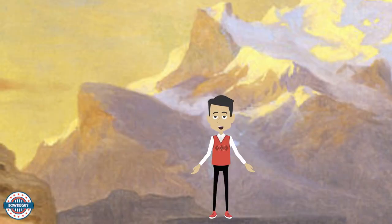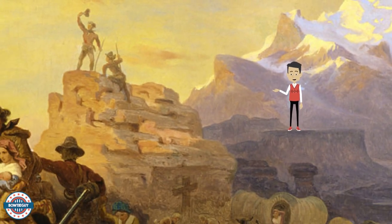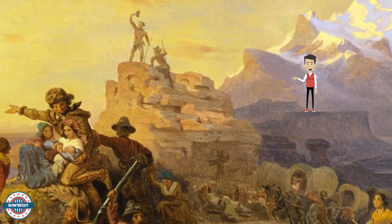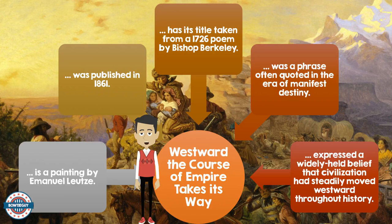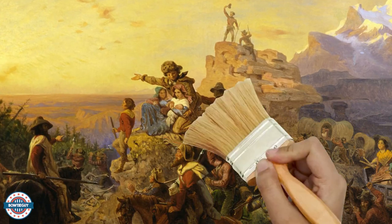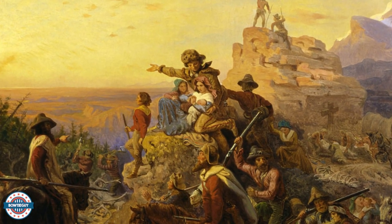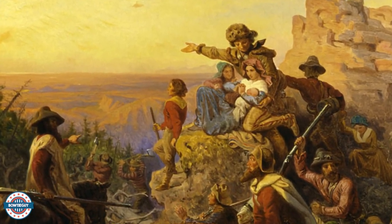This painting is entitled Westward, the Course of Empire Takes Its Way. It is a painting by Emanuel Leutze. It was published in 1861. It has its title taken from the 1726 poem by Bishop Berkeley. It was a phrase that was often quoted in the Era of Manifest Destiny. This painting is a representation of the widely held belief that civilization had steadily moved westward throughout history.